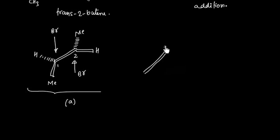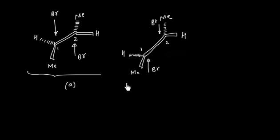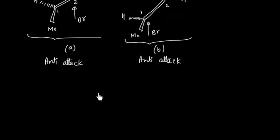We can have another possibility. Here we have methyl-hydrogen and hydrogen-methyl. On carbon-1 it can attack from the bottom, and on carbon-2 it can attack from the top. So we have two possibilities of anti (NT) attack — in both cases the attack is happening from opposite faces.